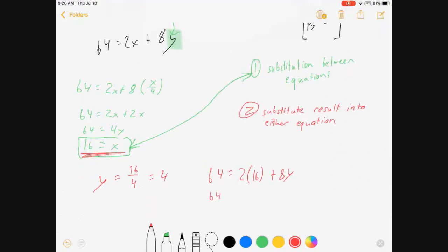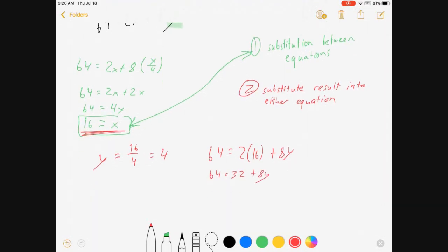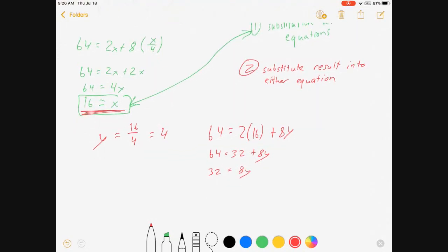64 equals 32 plus 8y. 32 equals 8y. I just subtracted 32 from both sides, by the way. 4 equals y. Hey look, it doesn't matter which way I do it.